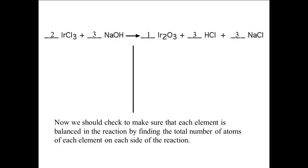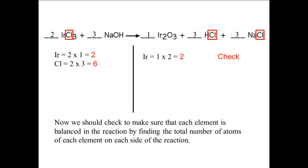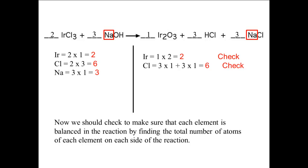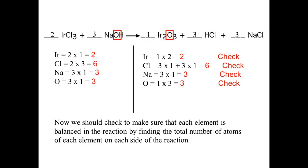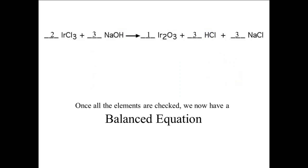Now we should check to make sure that each element is balanced by finding the total number of atoms of each element on each side of the reaction. For iridium, there are two atoms in the reactants and two in the products. For chlorine, there are six atoms in the reactants, and three plus three is six atoms in the products. For sodium, there are three atoms in the reactants and three in the products. For oxygen, there are three atoms in the reactants and three in the products. Once all the elements are checked, we now have a balanced equation.